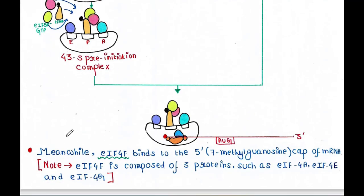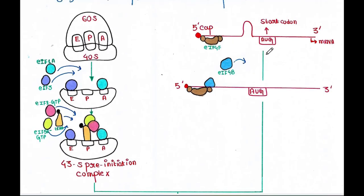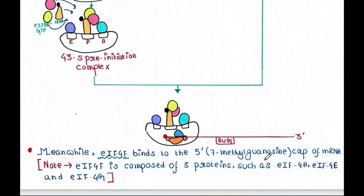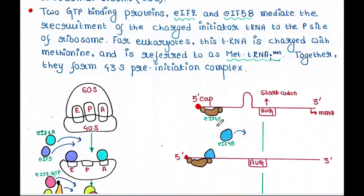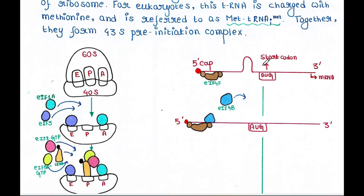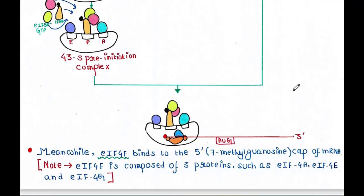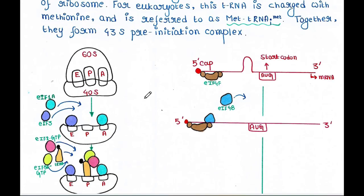Basically, eIF4F—this is another initiation factor—binds to the 5' cap of mRNA. So in eukaryotes, we know the mRNA contains a cap in its 5' end, and the cap is nothing but 7-methylguanosine. So this cap is now bound by this initiation factor eIF4F. This eIF4F is composed of three proteins such as eIF4A, eIF4E, and eIF4G.